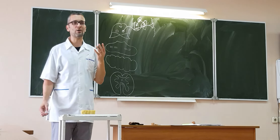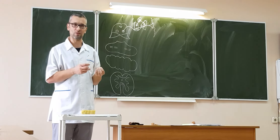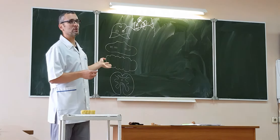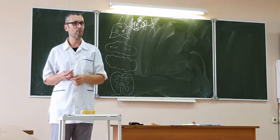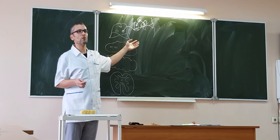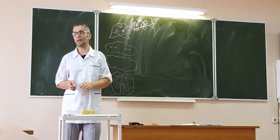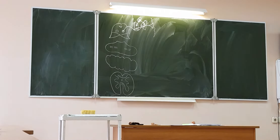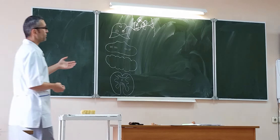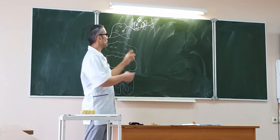If you remember, there are four functions of the extrapyramidal system: tone of muscles, body balance, coordination of movements, and automatic movements. The extrapyramidal system knows about your wish to move because the motor cortex sends information to it via the corticostrialis tract. When I go to the window, my extrapyramidal system helps me — it keeps my body in balance and coordinates my movements. This is because of the activation of the extrapyramidal system.